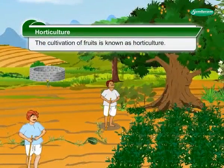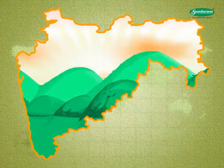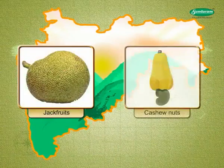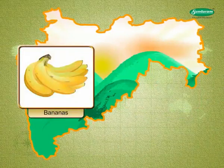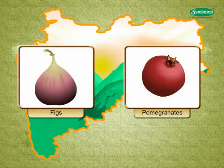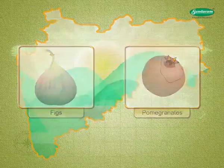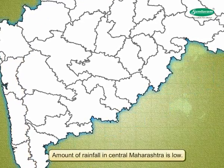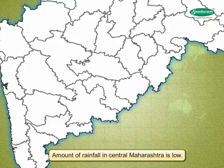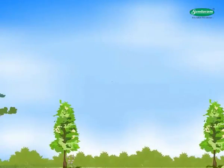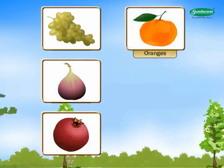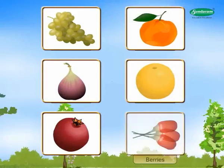Horticulture: The cultivation of fruits is known as Horticulture. The climate of Maharashtra is suitable for mangoes, oranges, jackfruits, cashew nuts, bananas, chikus, figs, and pomegranates. Mango orchards are found in Konkan. The amount of rainfall in central Maharashtra is low, and this type of climate is suitable to grow grapes, figs, pomegranates, oranges, sweet limes, and berries.